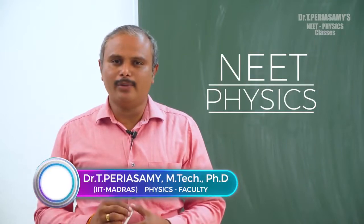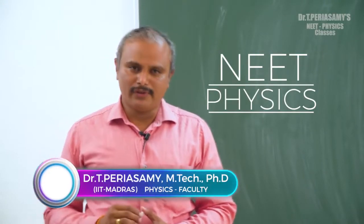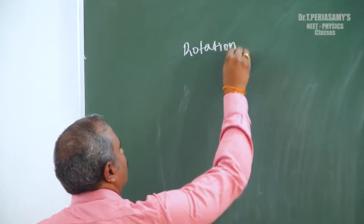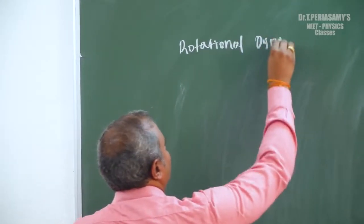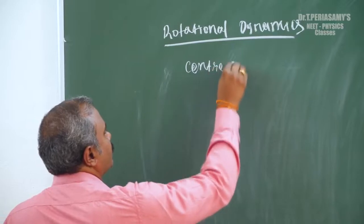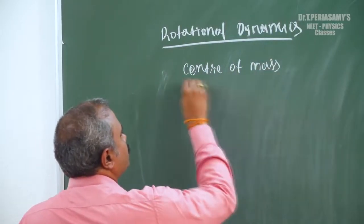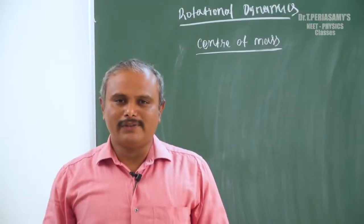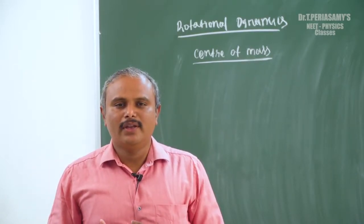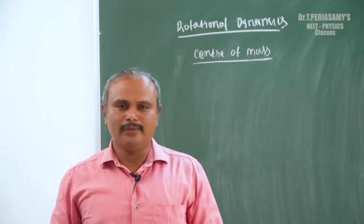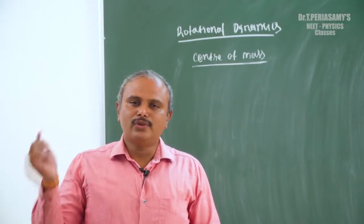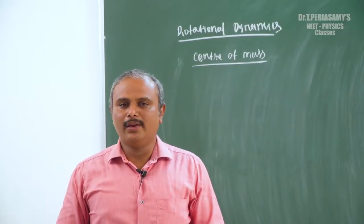Basically, in physics, the center of mass is the point where the total mass of the body is assumed to be concentrated at a single point. If we have a total body, all its mass is assumed to be concentrated at that single point — that is what we call the center of mass.